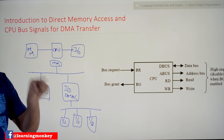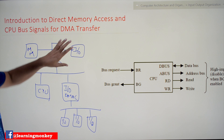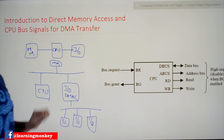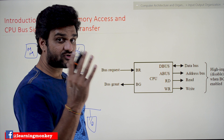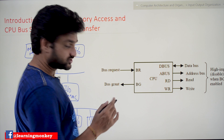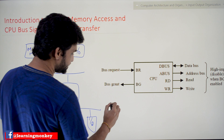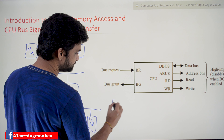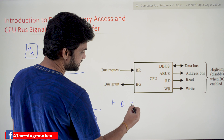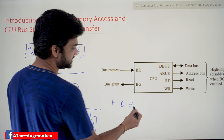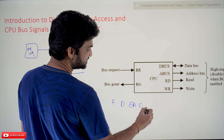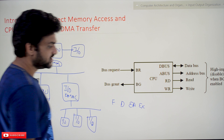There is an important difference between DMA and the previous transfer modes. There are four phases in an instruction execution: fetch phase, decode phase, effective address phase, and execute phase.